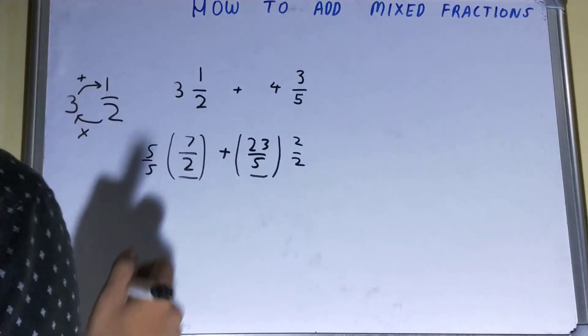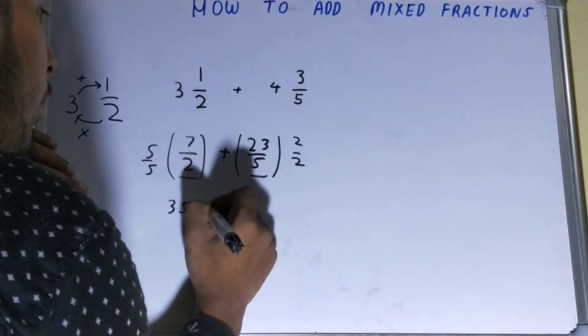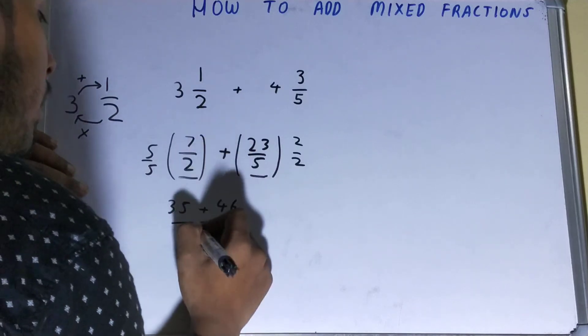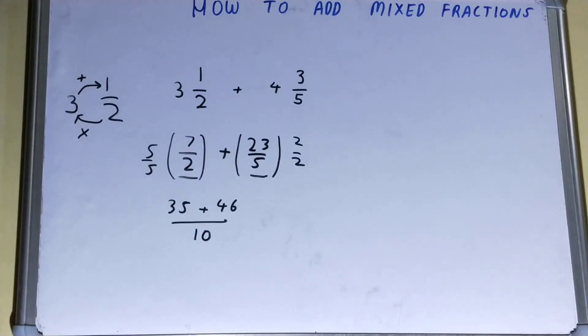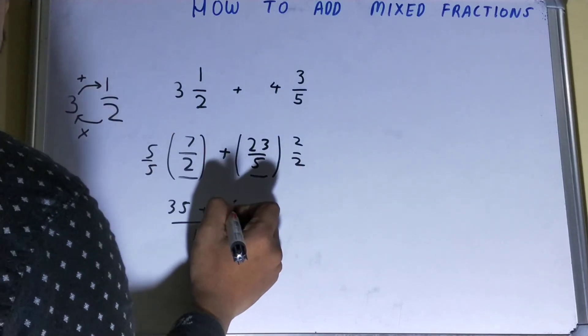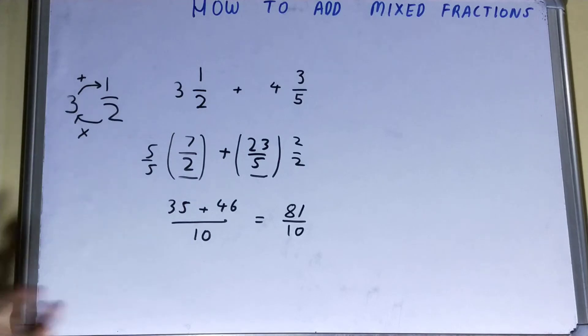Okay, so after multiplying it, what we'll get: 7 times 5 equals 35 plus 46 upon 10, right? And after adding this further on, 35 plus 46 equals 81, 81 by 10. So this will be our answer. This is how we can add.